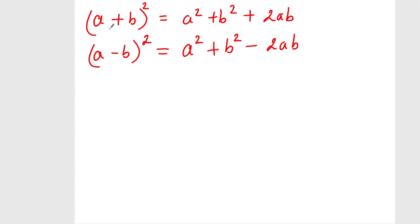Since we have already learned about the a plus b whole square, that is a squared plus b squared plus 2ab. And we have already learned a minus b whole square, that is a squared plus b squared minus 2ab. Only the sign is different there.